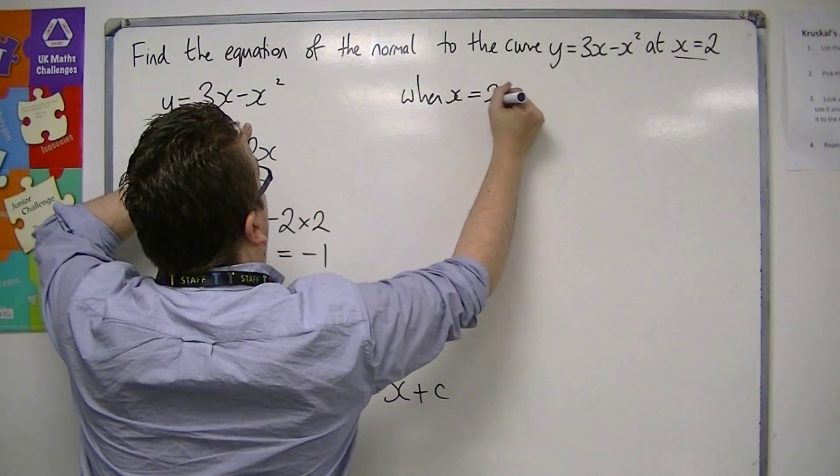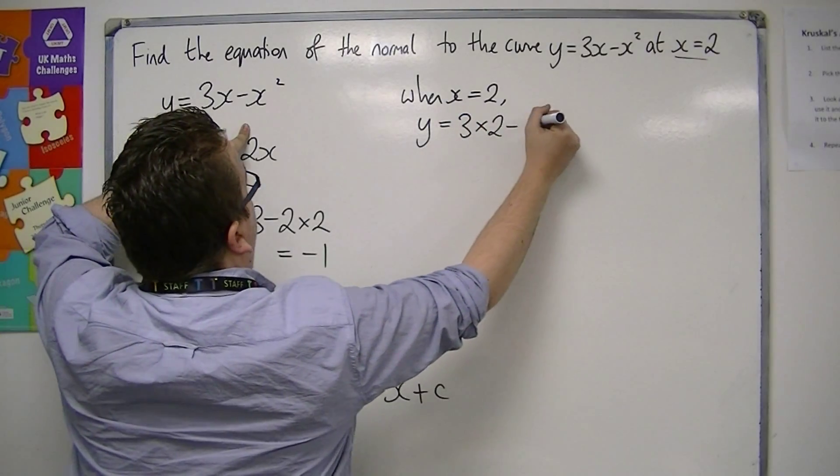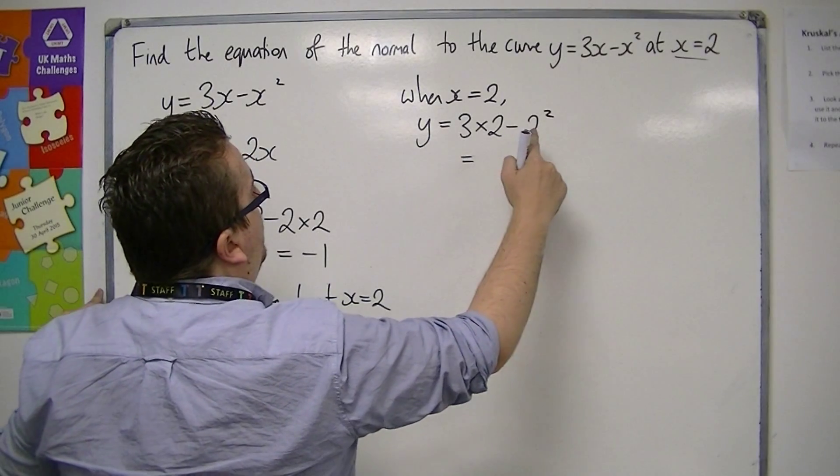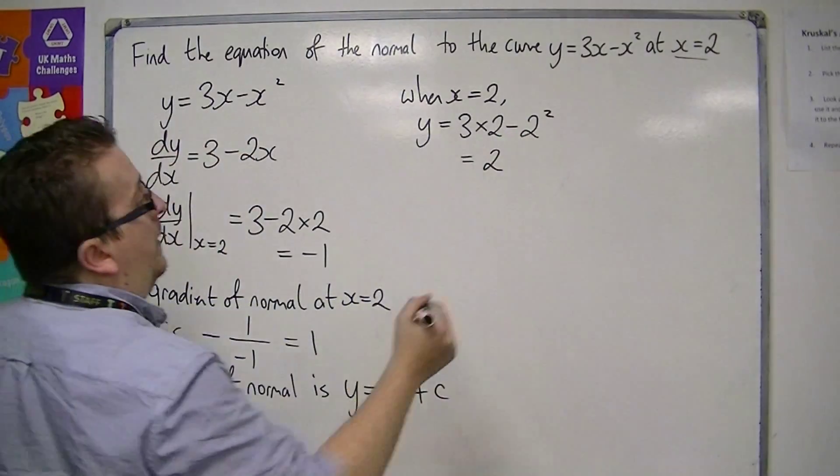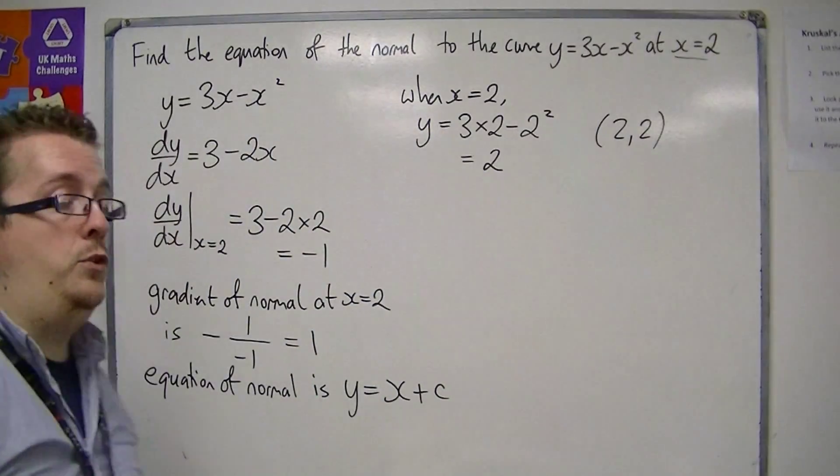So when x is 2, y is 3 lots of 2 take away 2 squared. So that's 6 take away 4, which is 2. So the coordinate on the curve that I'm looking at is (2, 2).